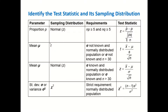Let's have a general idea. For population proportion p, you will use a test statistic z, and this is the formula you will use to calculate it. In the formula, p-hat is the sample proportion, and p is the population proportion.